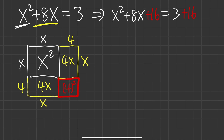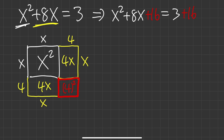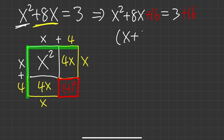We add 16 to both sides — whatever you do to one side, do it to the other. Now the left-hand side, x squared plus 8x plus 16, is a complete square. Looking at the picture, the full side is x plus 4, so the area is x plus 4 squared. You get the same result factoring algebraically.